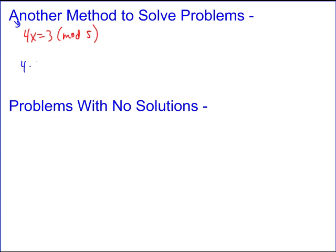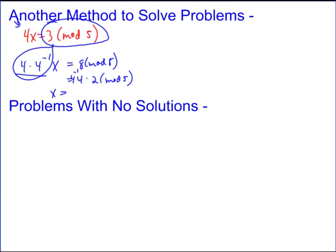But another way to do it is to understand that really when we multiply this, in this case by 4, we're multiplying by what we call the inverse. And so we're just multiplying by 4 times 4^(-1)x, and this is equivalent to 1. Well, if I can rewrite 3 mod 5, where the 3, instead of being 3, is something equivalent to 3 mod 5, but it's a multiple of 4, for instance in this case 8. Right? 8 is a multiple of 4, and it's equivalent to 3 mod 5. Then I can rewrite this as 4 times 2 mod 5.